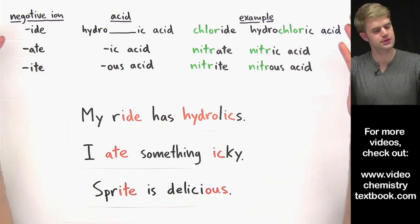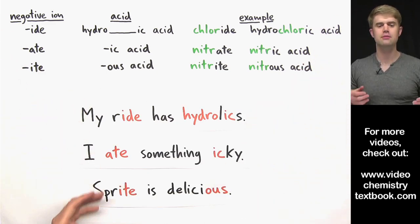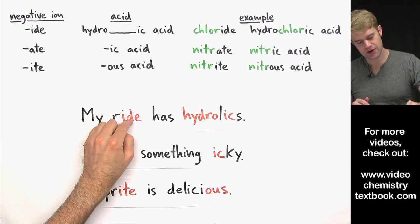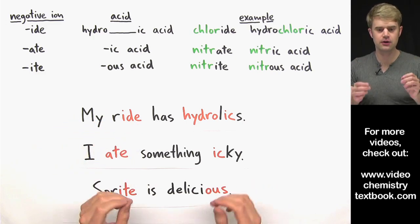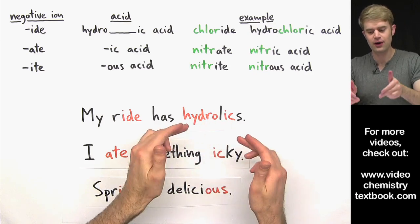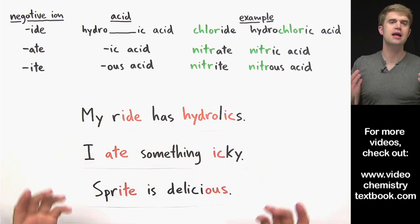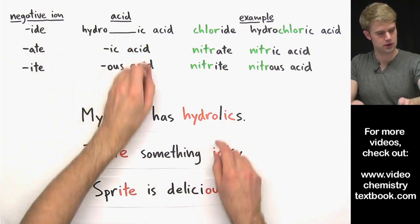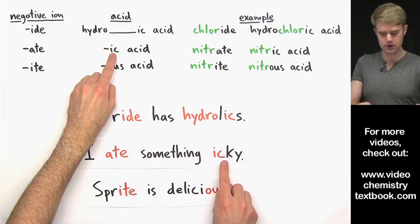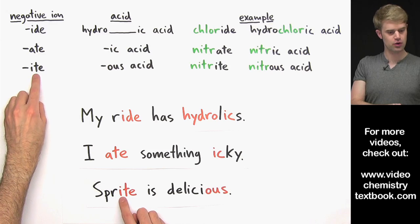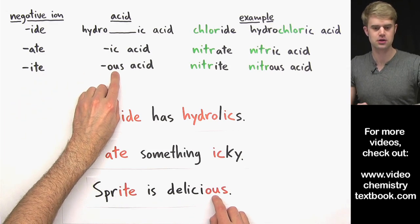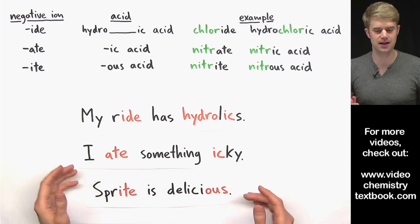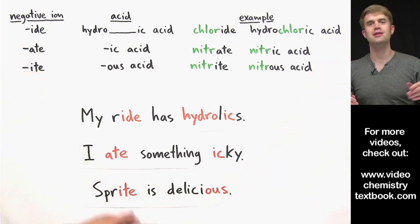If you're having trouble memorizing these rules here, these mnemonics can be a great help. Each sentence gives you the end of a negative ion, and then it tells you what the name should be for an acid that contains that negative ion. So my ride has hydraulics, I ate something icky, and Sprite is delicious. So learn these sentences, the rules will just instantly stick, and honestly you'll never forget them again.